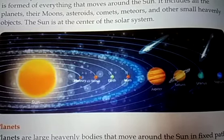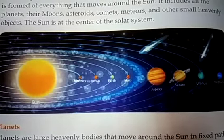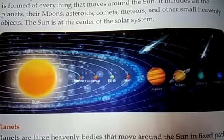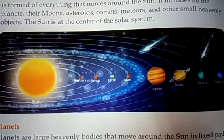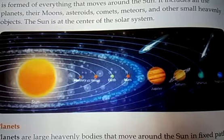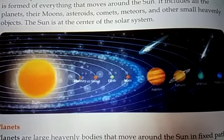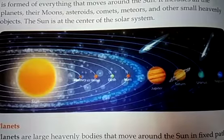The family of the sun is known as the solar system. The solar system is formed of everything that moves around the sun. So all the things which move around the sun comes under the solar system.